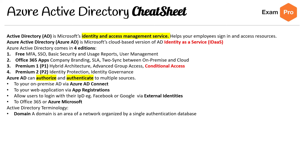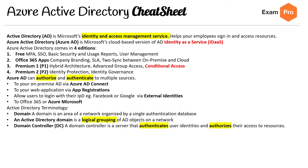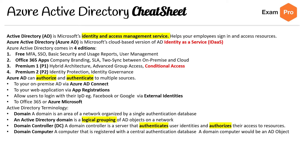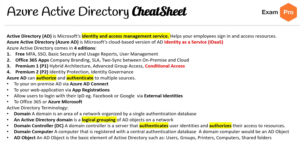For Active Directory terminologies: a domain is an area of a network organized by a single authentication database. An Active Directory domain is a logical grouping of AD objects on a network. A domain controller, commonly abbreviated as DC, is a server that authenticates user identities and authorizes their access to resources. A domain computer is a computer registered with a central authentication database — a domain computer would be an AD object. AD objects are the base element of Active Directory, things like users, groups, printers, etc.